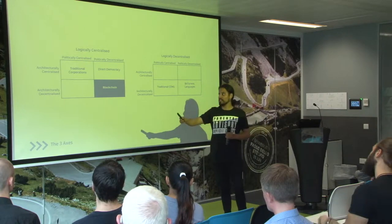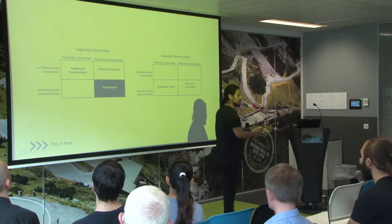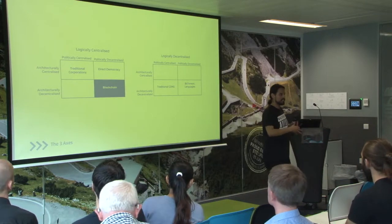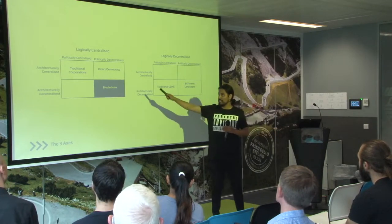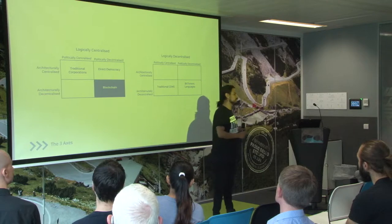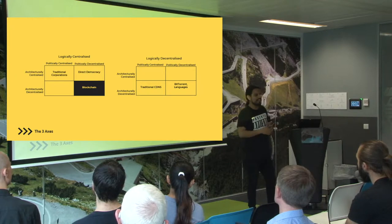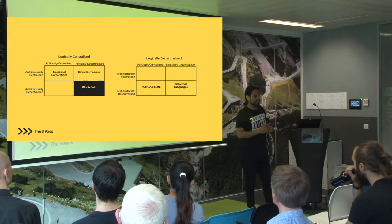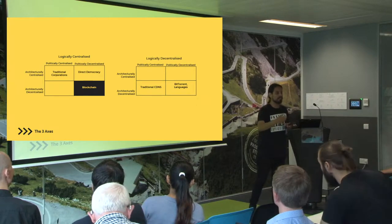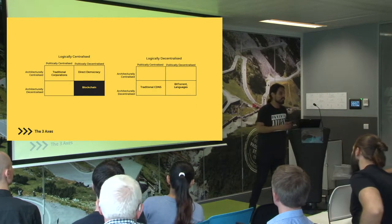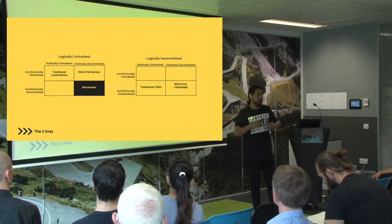Where does blockchain come in? It comes in as politically decentralized. Kyle already explained how different nodes come to a consensus and that's how everything is proved. And architecturally decentralized means all of us can download Bitcoin mining software and it functions — one of you dropping out doesn't mean the whole system comes down.